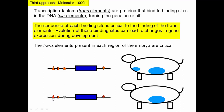Slight changes in the sequences of binding sites may cause trans elements to bind better or worse. For example, a mutation that knocks out a particular element means the trans element can't bind, and if it can't bind, it won't cause expression of that protein in that location. So changes in the cis elements can influence when and where genes are expressed during development. It's an interplay between the trans elements that are binding and the cis elements being bound — both together determine when and where genes are expressed.